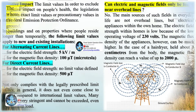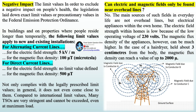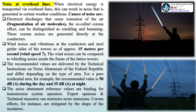Negative impact of transmission lines: in order to exclude a negative impact on people's health, legislation has laid down exact limit values in the Federal Emission Protection Ordinance. In buildings and on properties where people reside longer than temporarily, the following limit values apply to new and existing installations. For alternating current lines, the electric field strength is 5 kV/m and the magnetic flux density is 100 µT. For direct current lines, no limit value is defined for electric field strength, and the magnetic flux density limit is 500 µT.